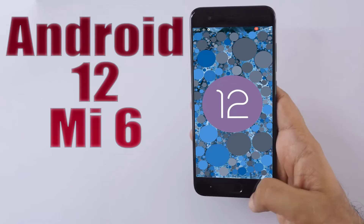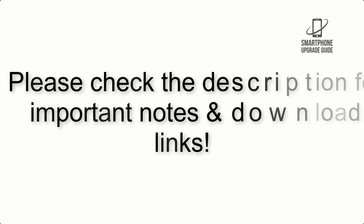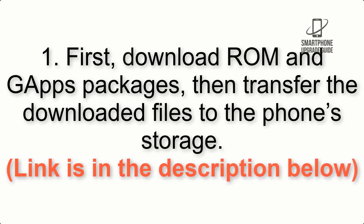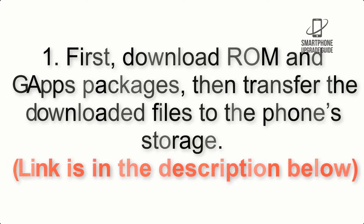Install Android 12 on the Moto G6 via Lineage OS 19.1. Please check the description for important notes and all the download links. First, download the ROM and GApps packages, then transfer the downloaded files to the phone storage. The link is in the description below.